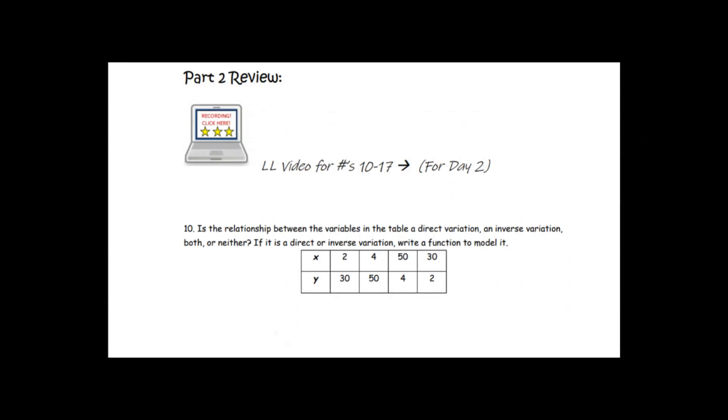So let's look at number 10. Is the relationship of the variables in the table, a direct variation, an inverse variation, both or neither? So friends, what I want you to do on this one is I want you to look at the pattern. I want you to see that x goes up by 2. I want you to see that x goes up by 46. I want you to see that x goes down by 20, so I put negative 20.